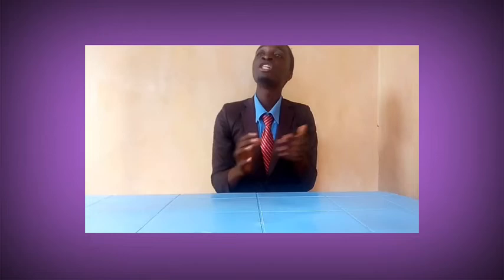Way number three: a professional teacher should be capable of integrating science and art skills. By science skills, I mean a professional teacher must be able to apply research findings — how to select the respective content required according to the particular group of learners. The art part of teaching is the capability of a teacher to make the class warm, lively, and interactive.